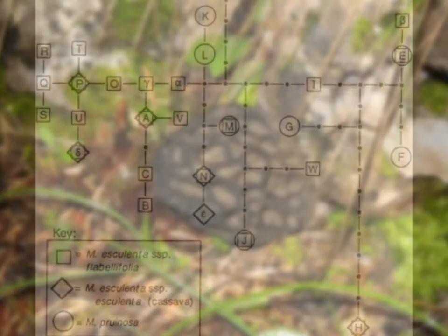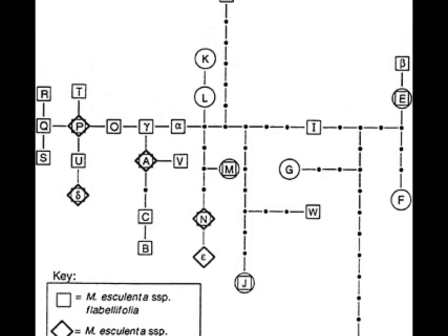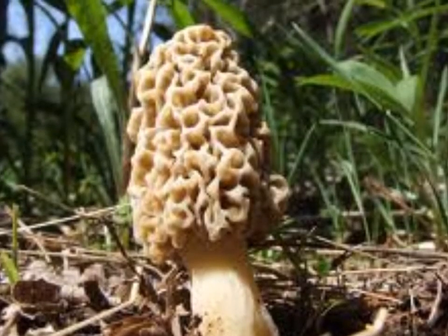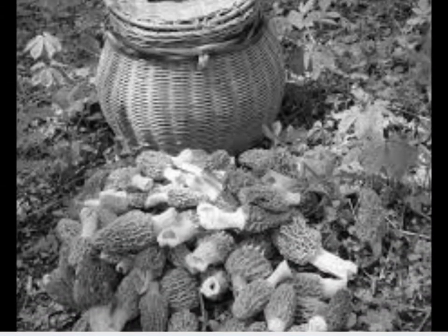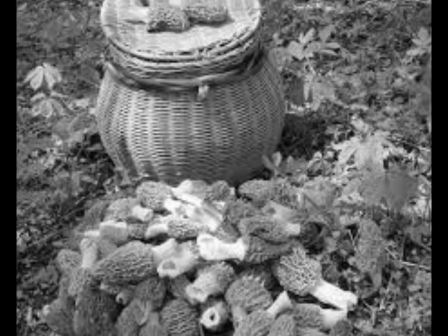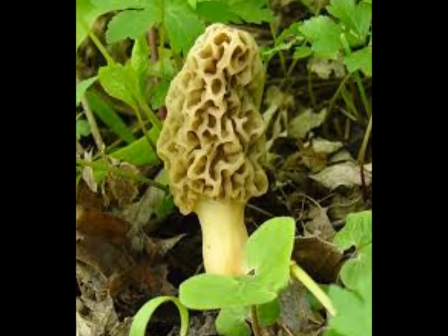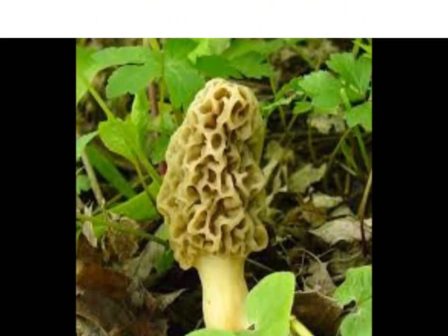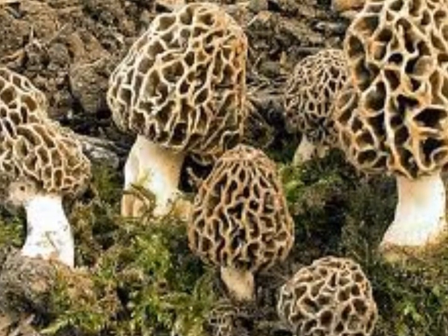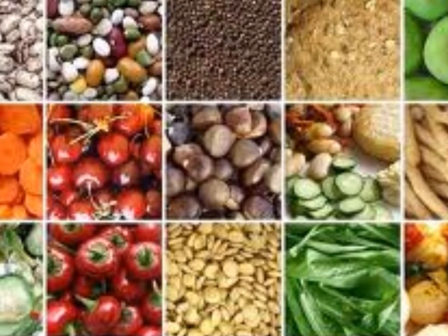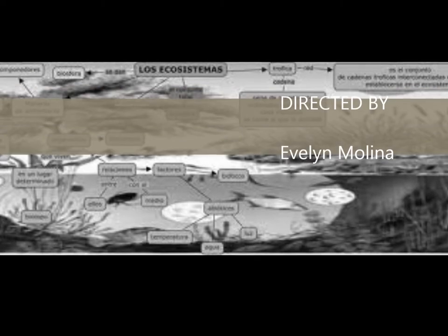Morchella esculenta is important because it is considered a food source with immune and anti-tumor properties. It is also considered antiviral and antioxidant. Morchella esculenta is beneficial to humans due to the anti-tumor and antiviral properties it contains. If Morchella esculenta were to go extinct, it would affect humans in different ways — we would lose a food source and a medical source, and the ecosystem would also be affected due to the loss of important decomposers.